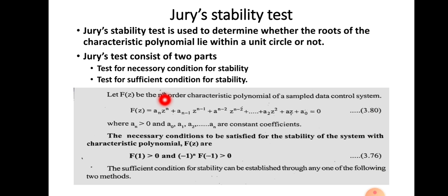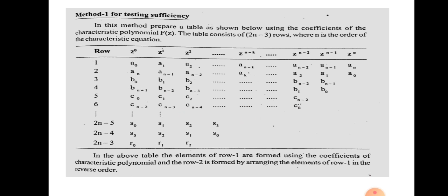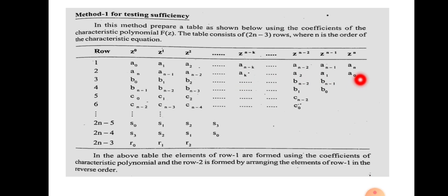The first row contains AN, AN-1, AN-2, ... A0. The second row is formed by reversing the first row. So the second row is A0, A1, ... AN. The first and second rows are formed easily. Next, we need to find the third row using a determinant equation.